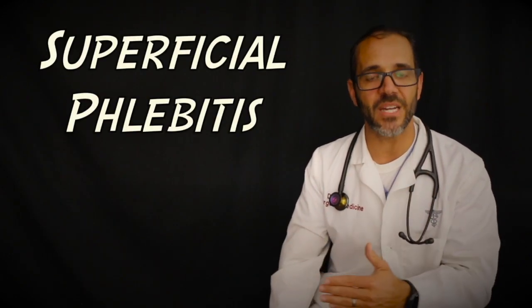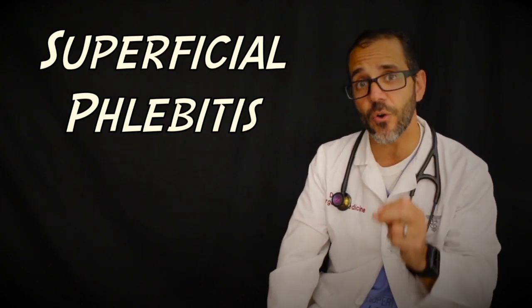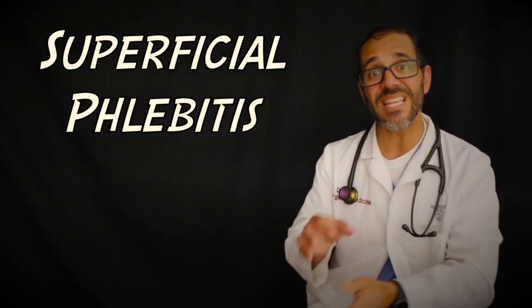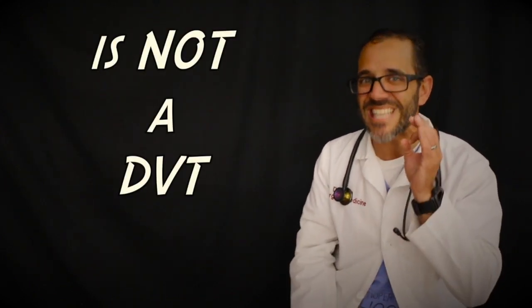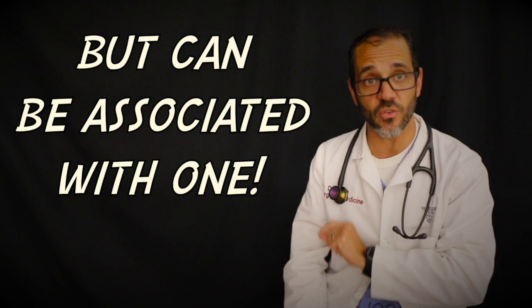Then there's superficial phlebitis or SP for short. It can cause pain and tenderness and firmness and or redness in a vein due to inflammation, infection and or a blood clot which is a thrombus. It is most commonly seen in the inner part of the lower legs. SP differs from deep vein thrombosis because the veins affected are near the surface of the skin. Superficial phlebitis is not a DVT, but in up to 15 to 20 percent of cases, if you have superficial phlebitis, you might also have a DVT.